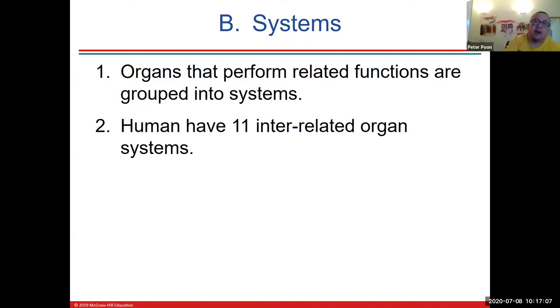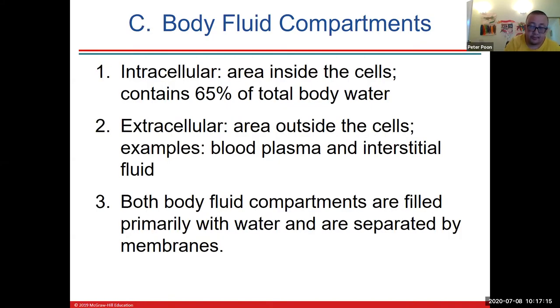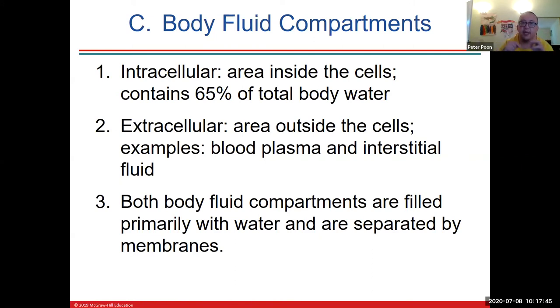Organs perform related functions within systems. Last topic for this chapter: fluid compartments. Intracellular fluid is 65% of body fluid; extracellular fluid is 35%. The extracellular fluid is separated into two: interstitial fluid — the fluid around the cells themselves — and the plasma of the blood. They're slightly different from one another.